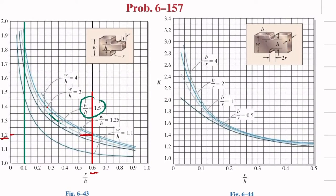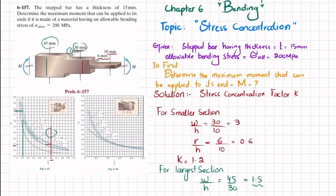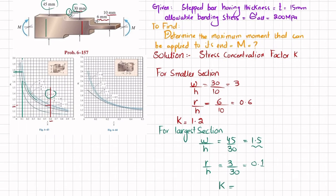Drawing a vertical line at R/H = 0.1 and finding the W/H = 1.5 curve on the chart, the intersection gives K = 1.77. So the stress concentration factor for the larger section is K = 1.77.